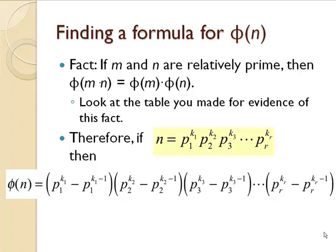Therefore, if n is a number with prime factorization p1 to the k1 all the way up to pr to the kr power, then phi of n is the product of the phi values of those primes to powers. So phi of n equals phi of p1 to the k1 times phi of p2 to the k2, all the way up to phi of pr to the kr.